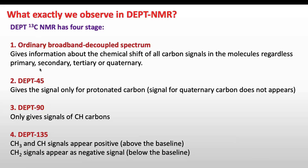The broadband decoupled spectrum gives information about the chemical shift of all carbon signals in the molecule, regardless of whether they are primary, secondary, tertiary, or quaternary. Because this is a general carbon NMR, we will see peaks for all types of carbon. Then comes DEPT 45.